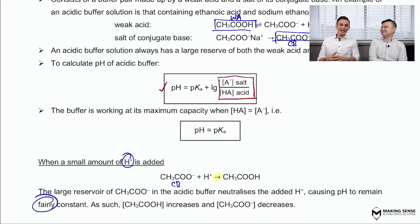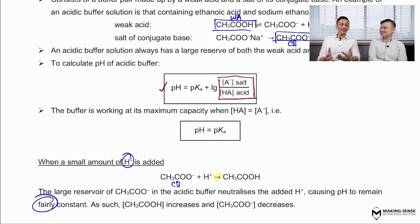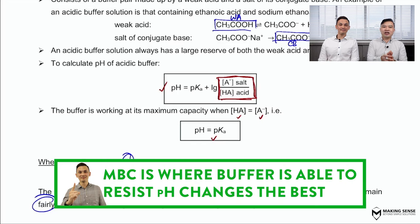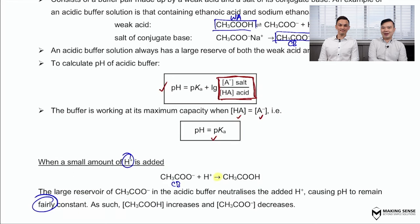Using the army analogy: to defend the country best, you should allocate 50/50 resources between both armies. In the context of the acidic buffer, this means having equal amounts of the acid and the conjugate base. Mathematically, when concentrations are equal, the ratio equals one, and log(1) = 0, so the second term disappears, leaving a much simpler equation. This special scenario — where the buffer resists pH changes best — is called maximum buffer capacity.